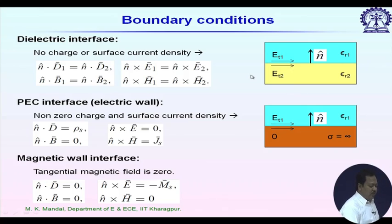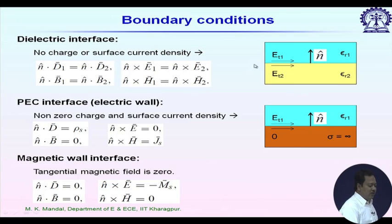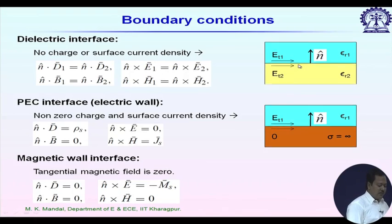Similarly, the tangential component of electric field is continuous across the boundary: E_t1 equals E_t2. Just inside medium one and just inside medium two, these parallel electric field components are equal. Similarly, for the magnetic field, the tangential components H1 and H2 are also continuous.